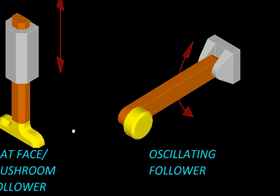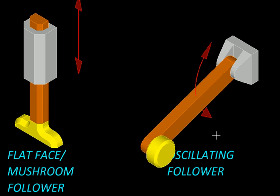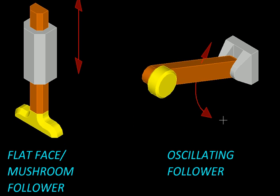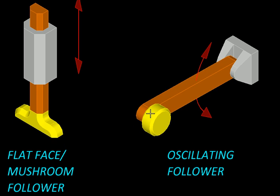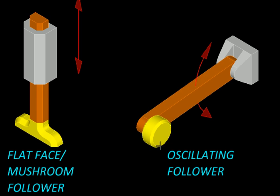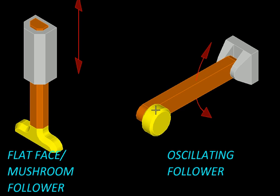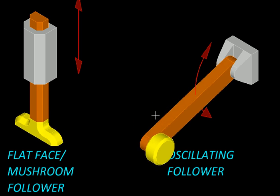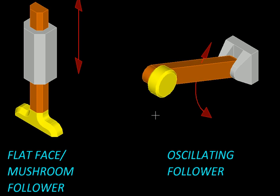And finally, here is an oscillating follower. It is undergoing an angular displacement. And of course, one can imagine different end conditions here. One shown here is a roller but we could as well have a knife edge or a flat face over here.